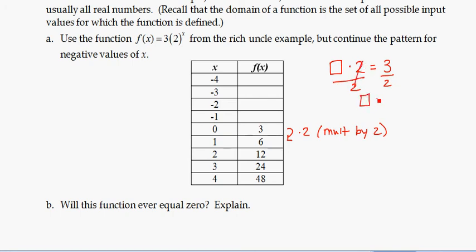And so that missing value must be 3 halves. So in order to make this pattern true, this 3 halves is the number that when I multiply it by 2, I get to 3.